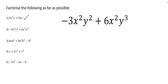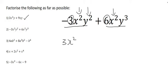Moving on to number 2. We have two terms once again. With the numbers 3 and 6, the biggest number you can take out is 3. Both terms have x squared, so we can take out x squared. One term has y squared and the other has y cubed, so we take out the lowest power, which is y squared.